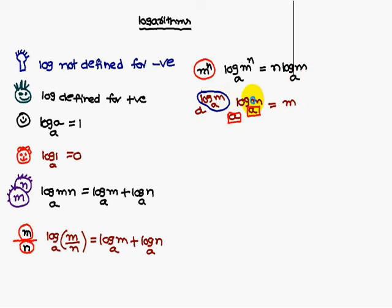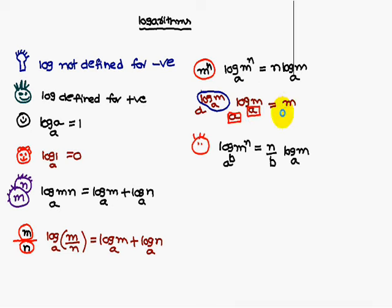Similarly, a to the power log M base a equals M, since the two operations cancel each other. And log M to the power N, base a to the power B, equals N/B times log M base a.